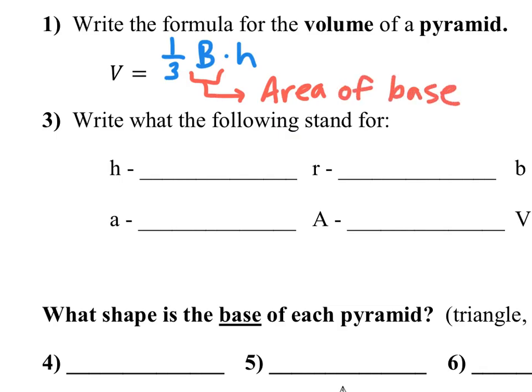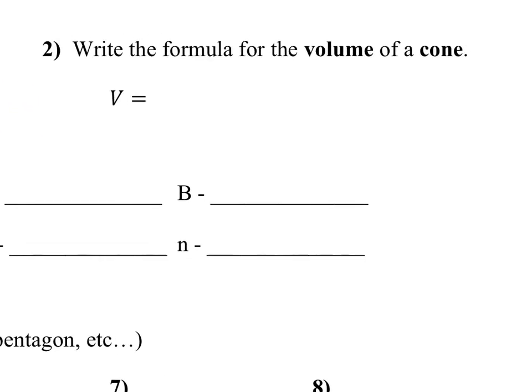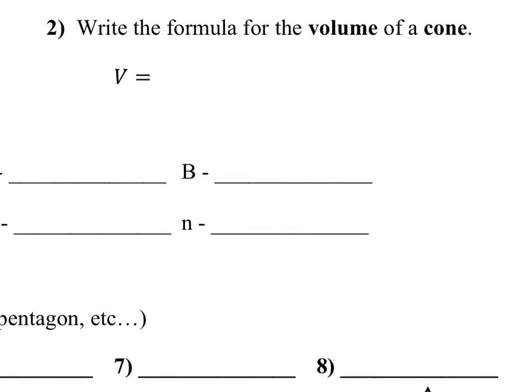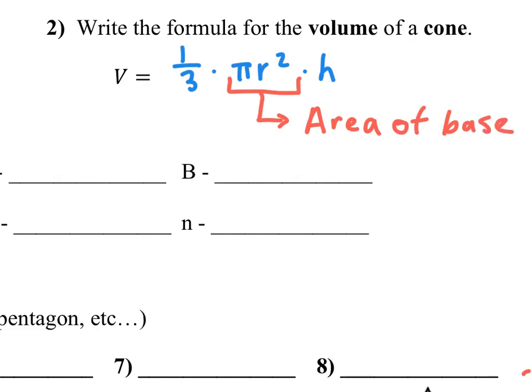And then similar to cylinders, the volume of a cone is 1 third times pi r squared times height. Now remember pi r squared is also the formula for the area of a circle, because the cone has a base that's a circle. So again, this is also the area of the base. It just happens to be a circle every time with a cone.